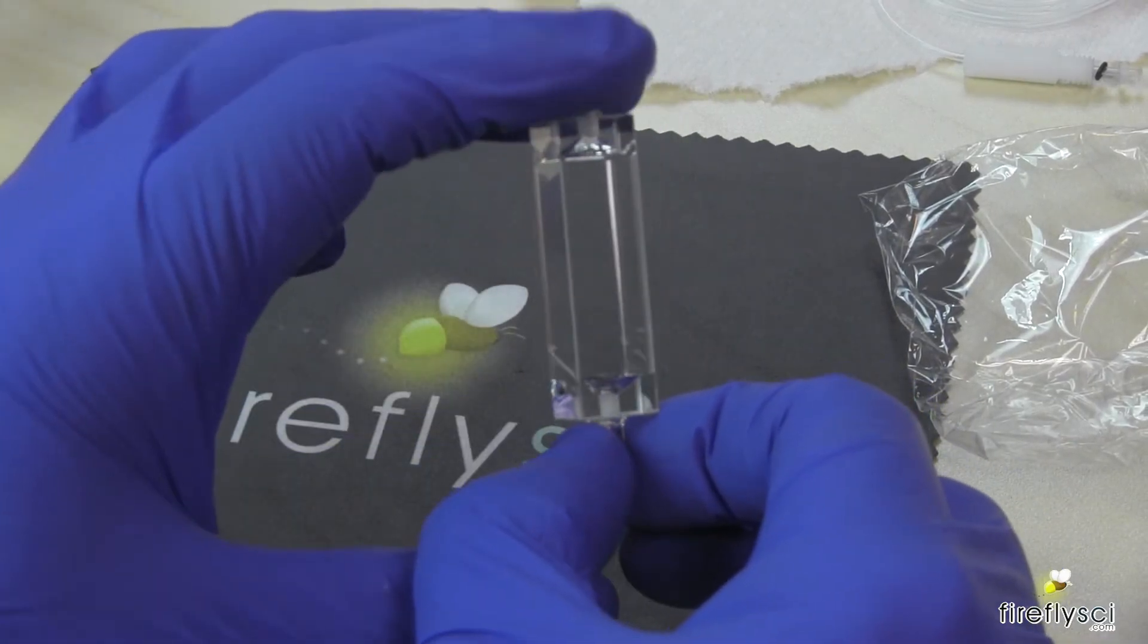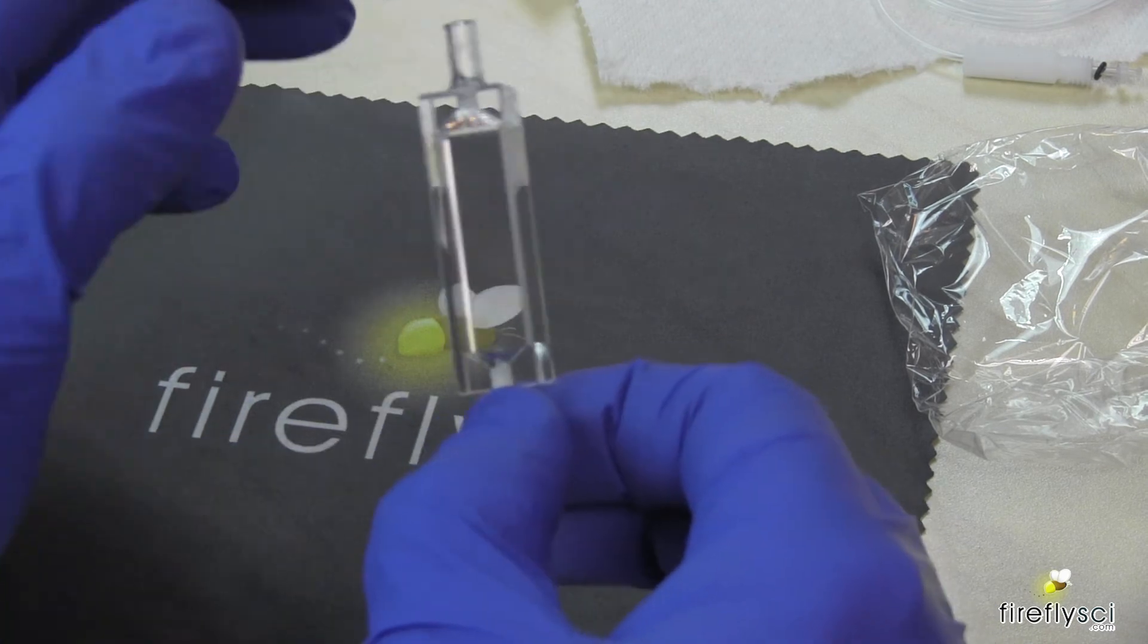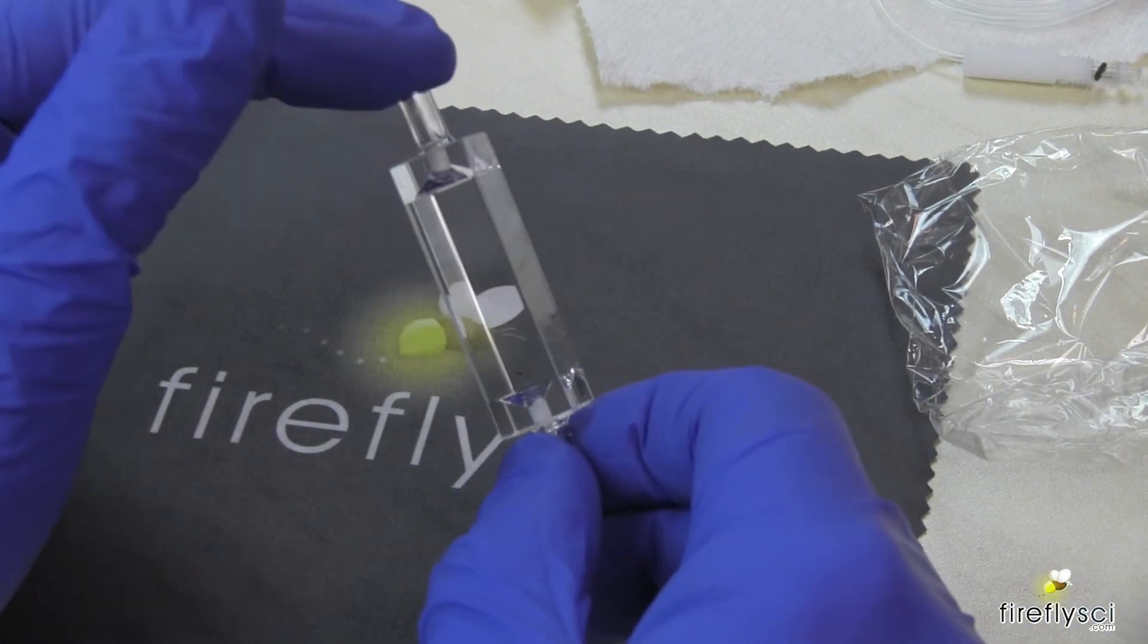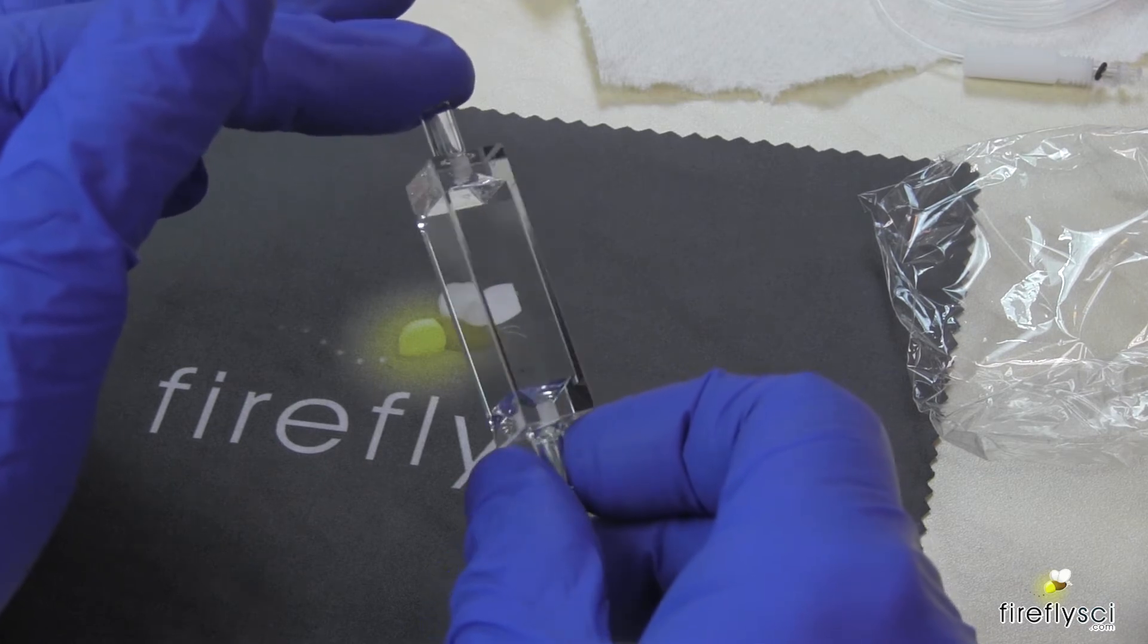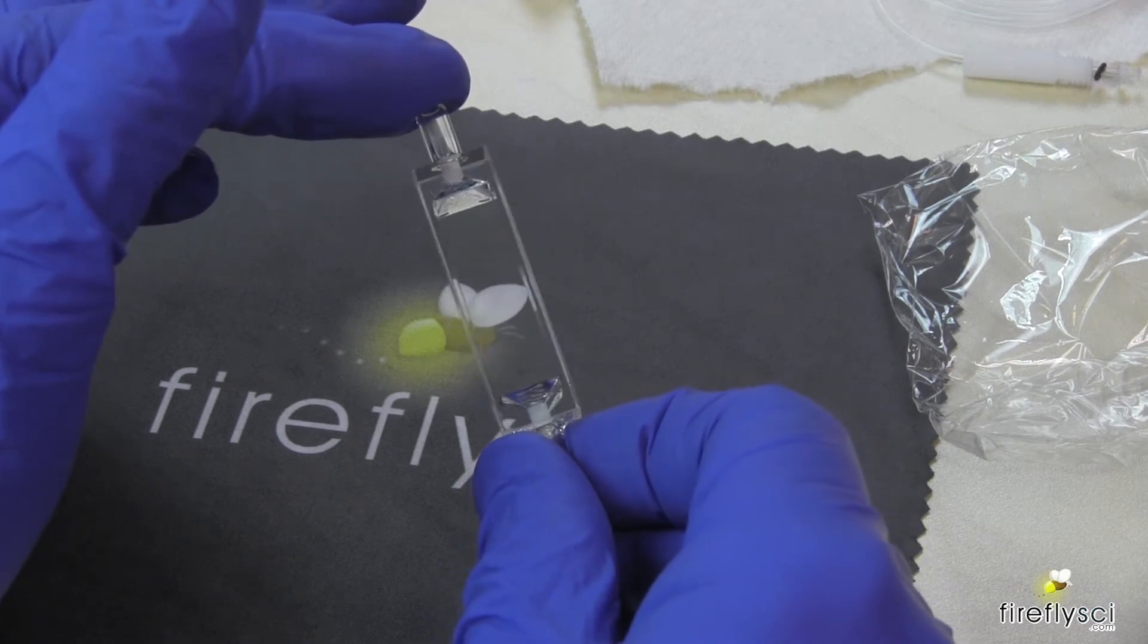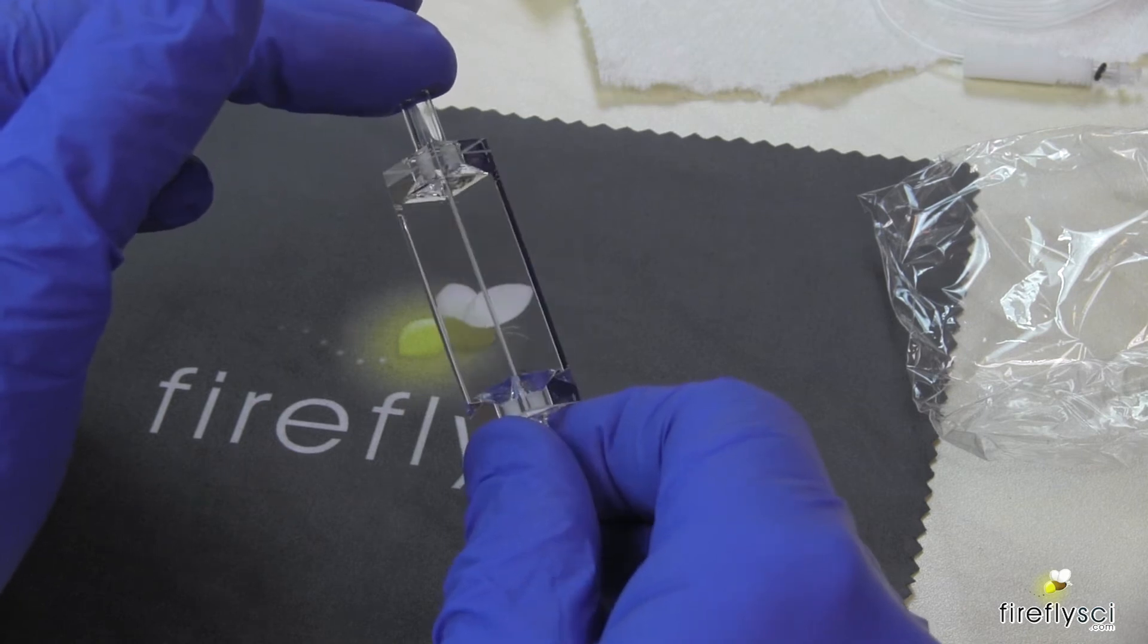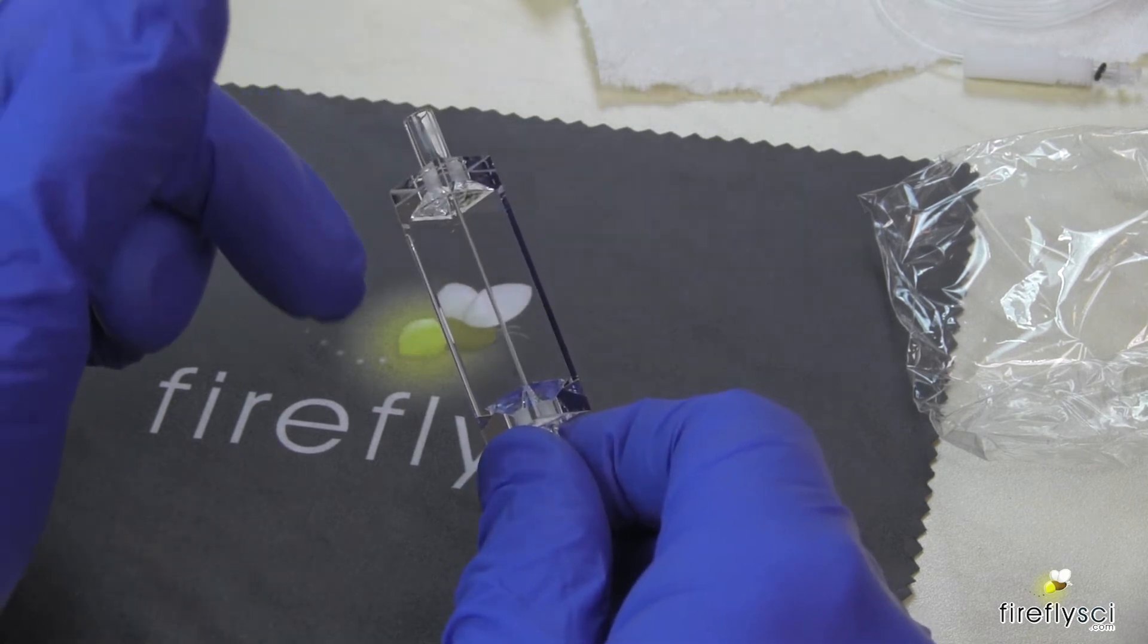And most flow cells have an inlet and outlet on the top and bottom, like this cell that we see here. This design is most popular since it allows a sample to easily flow through the cell in a smooth, turbulence-free flow.